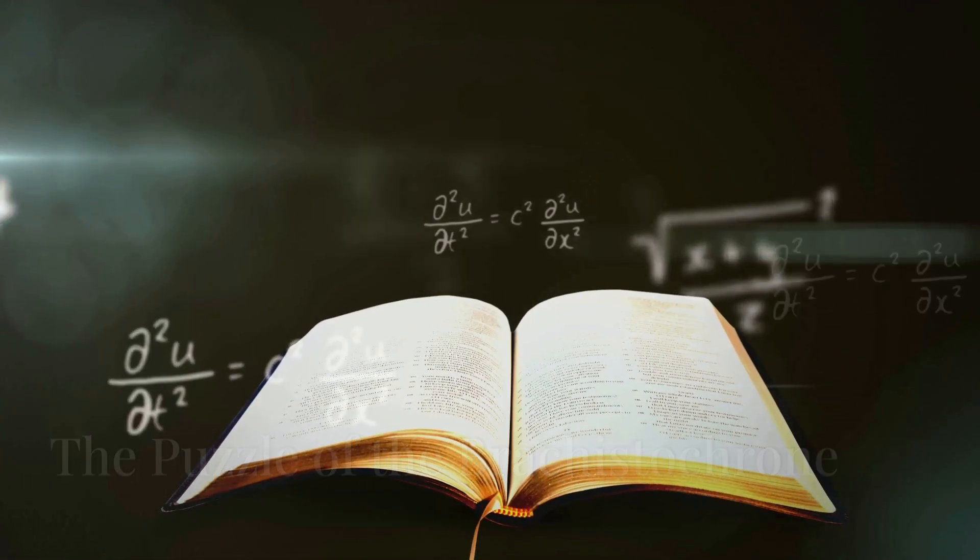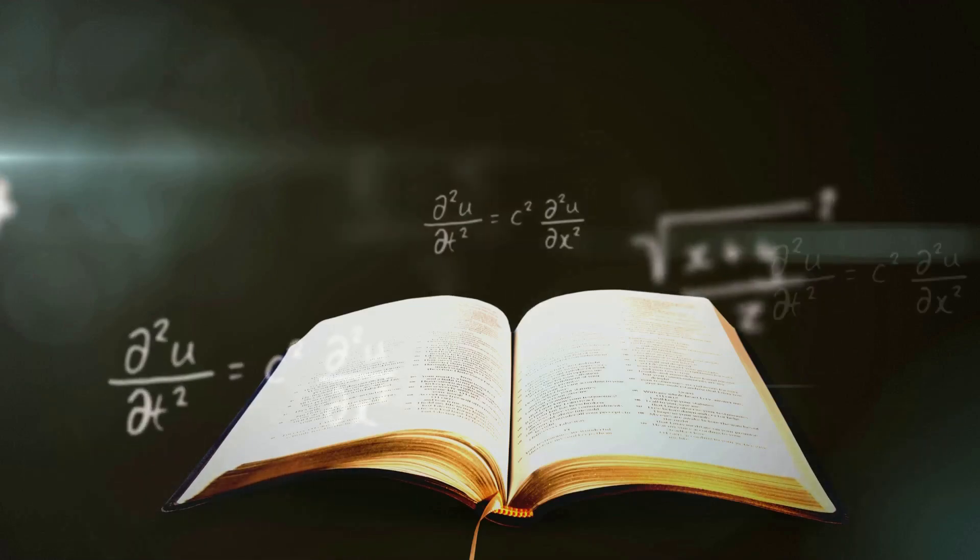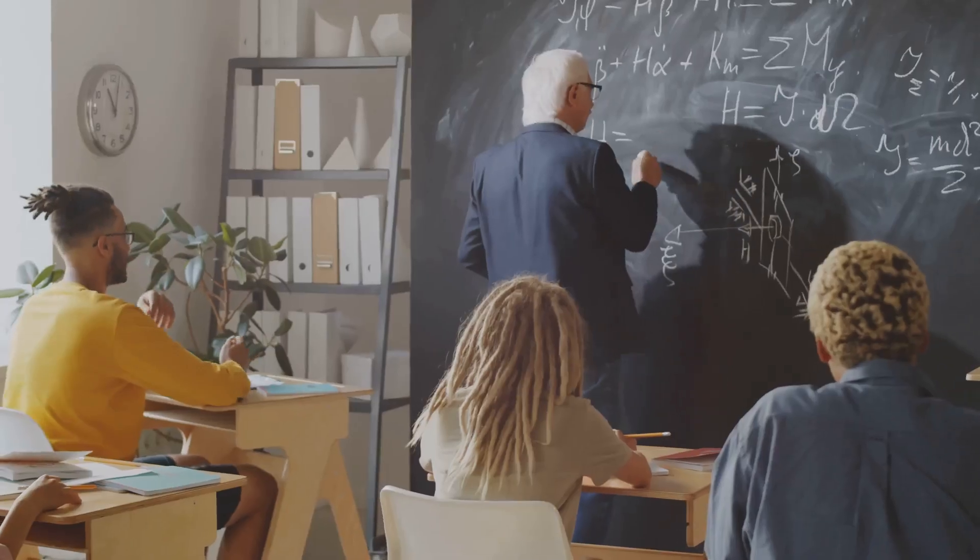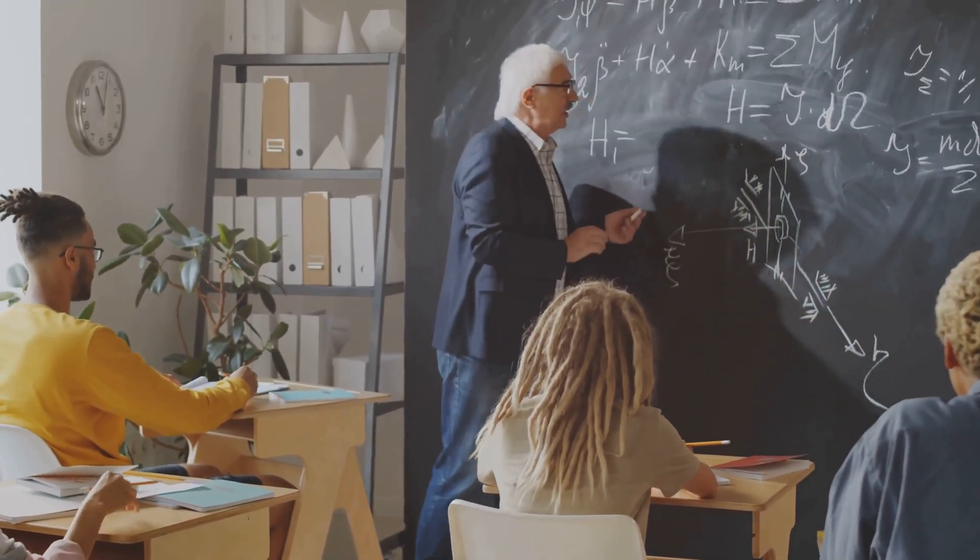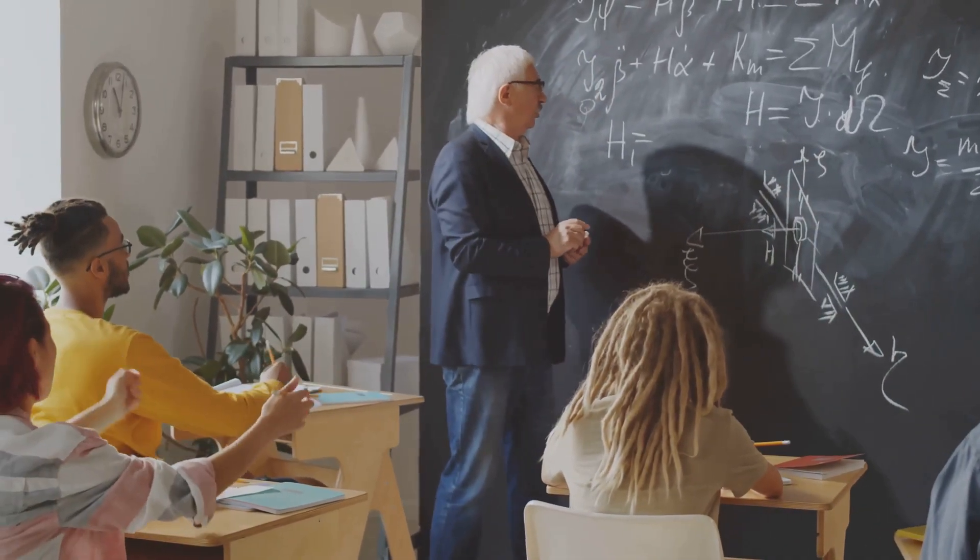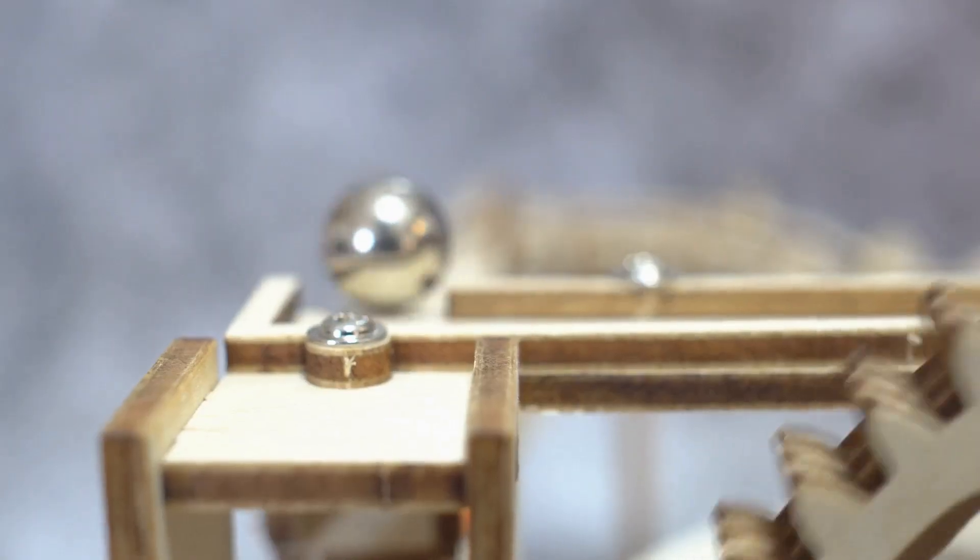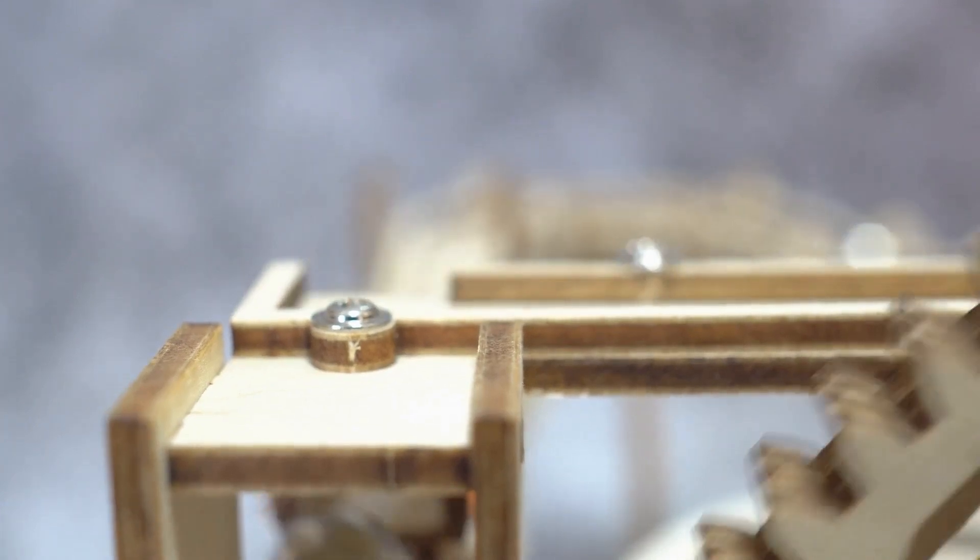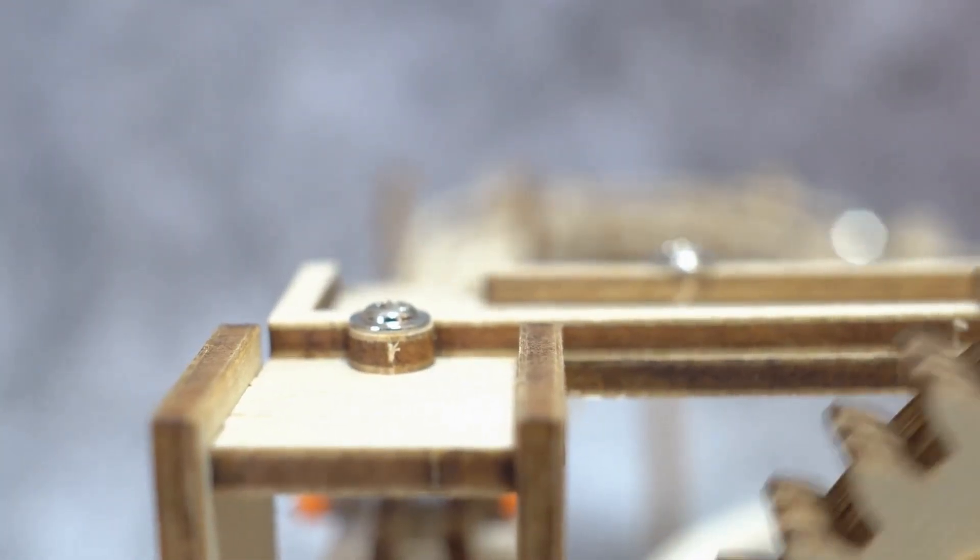The story of the principle of least action begins with a puzzle, a challenge that would intrigue and perplex the greatest minds of its time. In 1696, the brilliant mathematician Johann Bernoulli posed a challenge to his peers, a challenge that would echo through the annals of mathematical history. He asked them to find the fastest path for a bead to slide down between two points, a seemingly simple yet profoundly complex problem.